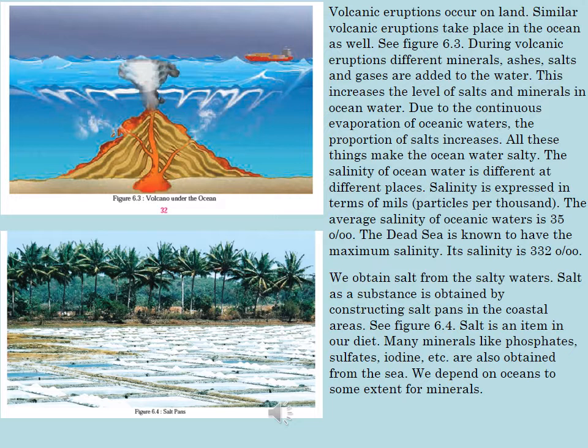The Dead Sea is known to have the maximum salinity — its salinity is 332 particles per thousand. We obtain salt from salty waters by constructing salt pans in the coastal areas, as shown in Figure 6.4. Salt is an item in our diet. Many minerals like phosphates, sulfates, iodine etc. are also obtained from the sea. We depend on oceans to some extent for minerals.